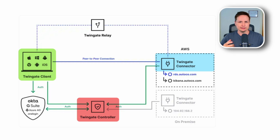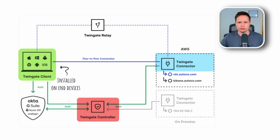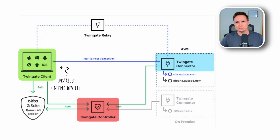The client is exactly what it sounds like — this is just client software running the TwinGate client that you install on your end devices like your desktop, laptops, phones, and tablets. They have versions for iOS, Android, Windows, and macOS, so basically any type of operating system. Your devices use this to connect up with your connectors.